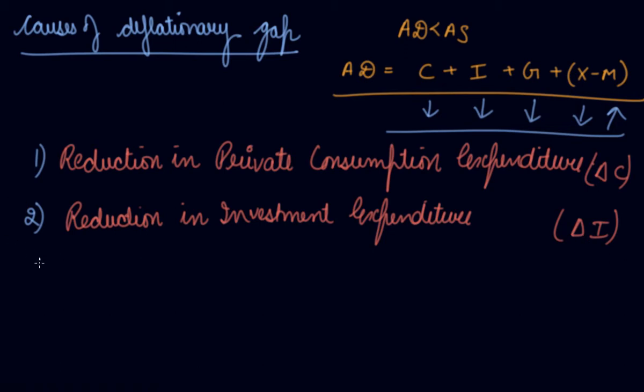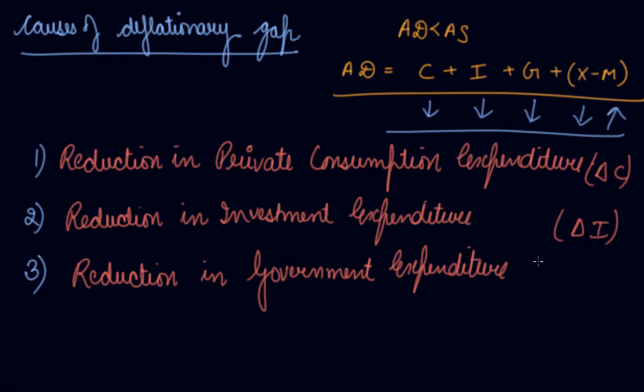The third we have is reduction in government expenditure. Like government is not giving pensions, government is not giving the subsidies. So the government is reducing its expenditure. So in this way, if the government is reducing its expenditure, it is reducing the social welfare. It is reducing the aggregate demand in the economy.